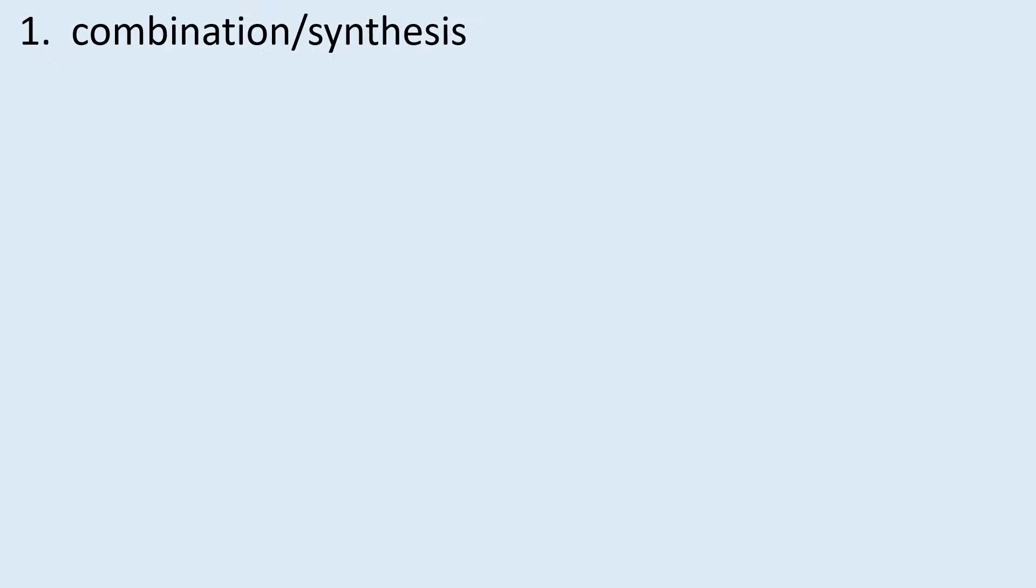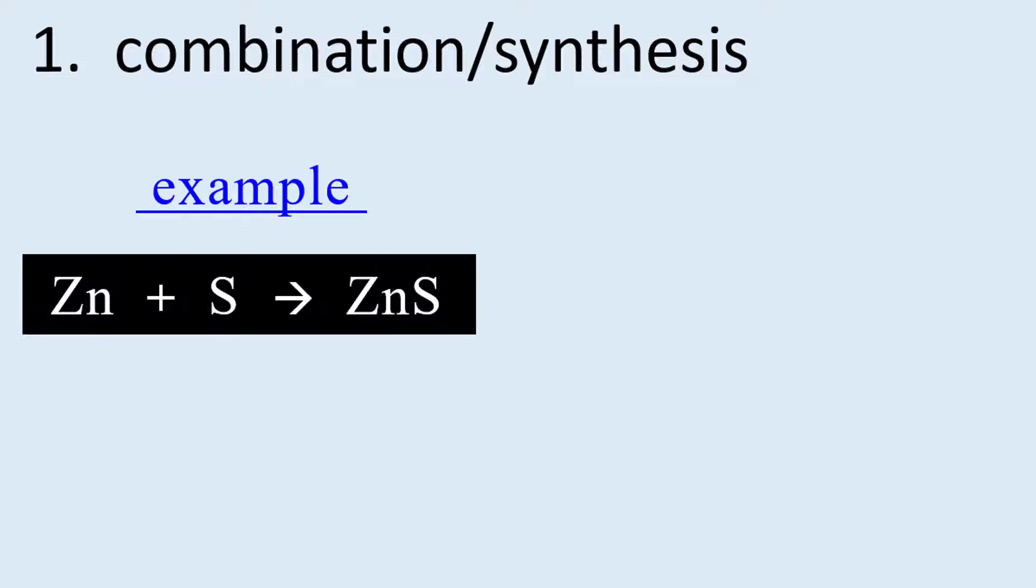Our first reaction type is called combination slash synthesis. Synthesis is a much broader term than combination, so we will stick with just combination. Basically we are combining atoms or molecules to create a new molecule. For example, zinc and sulfur combined to produce zinc sulfide.